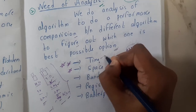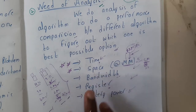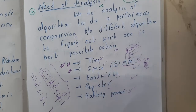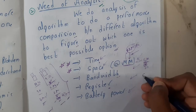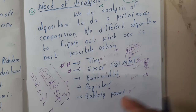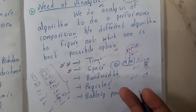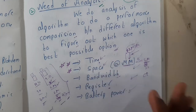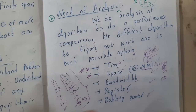So analysis can be done with respect to time, space, bandwidth, registers, and battery power. Among all these, obviously time is most valuable - that is why most of the time we discuss time complexity only. We rarely see space complexity or any other complexity. One more reason we avoid space complexity: storage keeps increasing - your phone might have 64, 128, or even 256GB. There is basically no limitation for space, but time is always limited - in a day you have 24 hours. That is why time is more valuable and we mostly do time analysis.